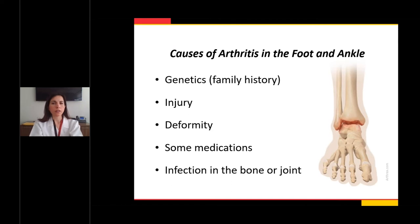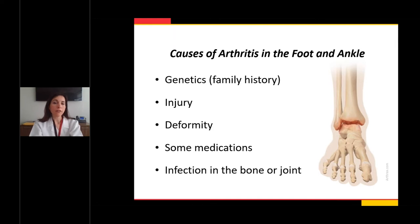Some of the causes of arthritis in the foot and ankle include genetics — you may have a family history of members with bad arthritis in the foot or ankle. There may have been an injury in the past, anything from an old sports injury to a car accident or a bad sprain. A deformity, either present at birth like a club foot or developing over time like a severe flat foot, can also be a cause. Some medications and joint infections can lead to arthritis as well.